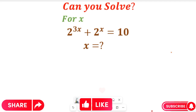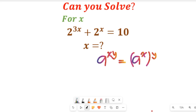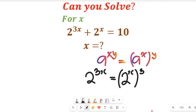Let's recall a law of indices. If you have a to the power of xy, where the powers are multiplying, this can be equal to a to the power of x, multiplied by the power of y — or inverted the other way. So 2 to the power of 3x can be separated: it equals 2 to the power of x, raised to the power of 3.